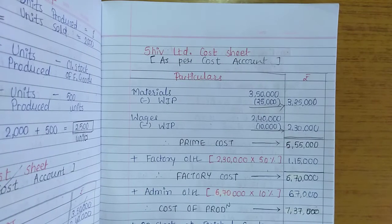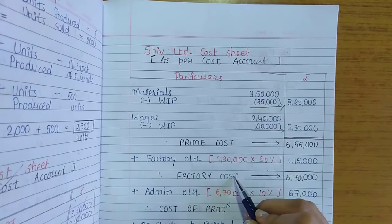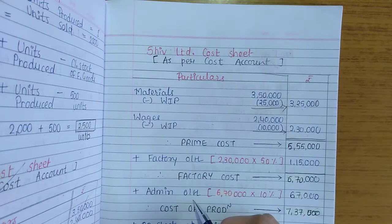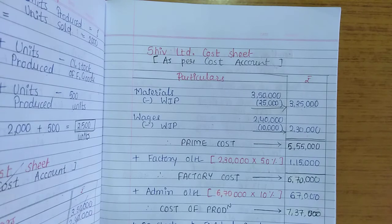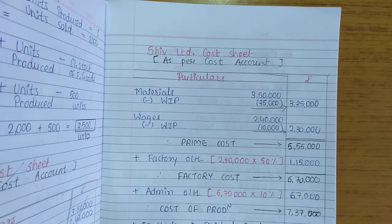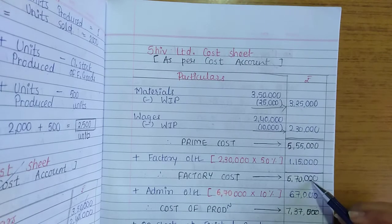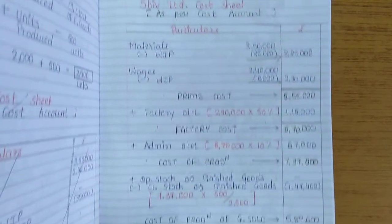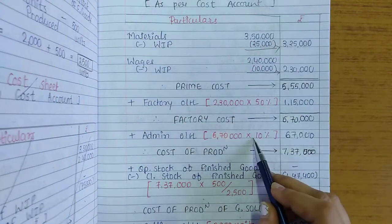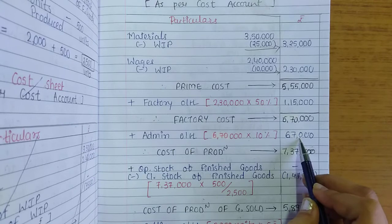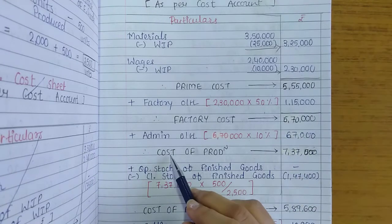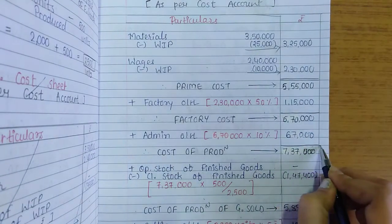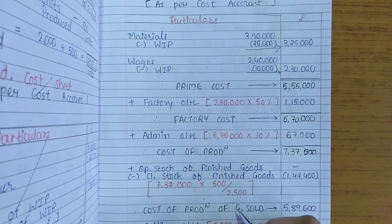Next, add admin overheads. Condition three states office expenses are charged at 10% of factory cost. Factory cost is Rs. 6,70,000; 10% of that gives admin overheads of Rs. 67,000. So the third cost — cost of production — comes to Rs. 7,37,000.